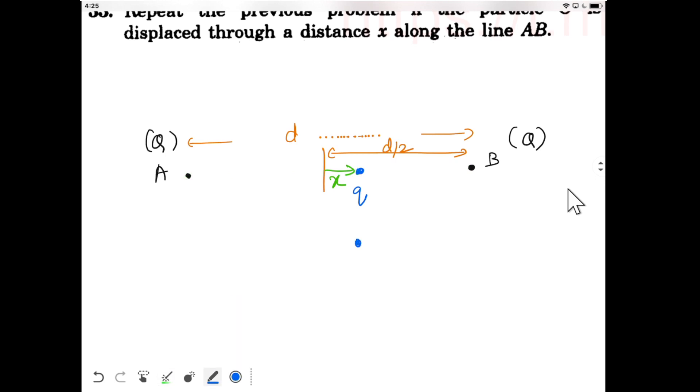On this side we have force due to charge B, that is F_B. Assuming q is positive, charge B will repel the small q charge, and A will apply force F_A in this direction.